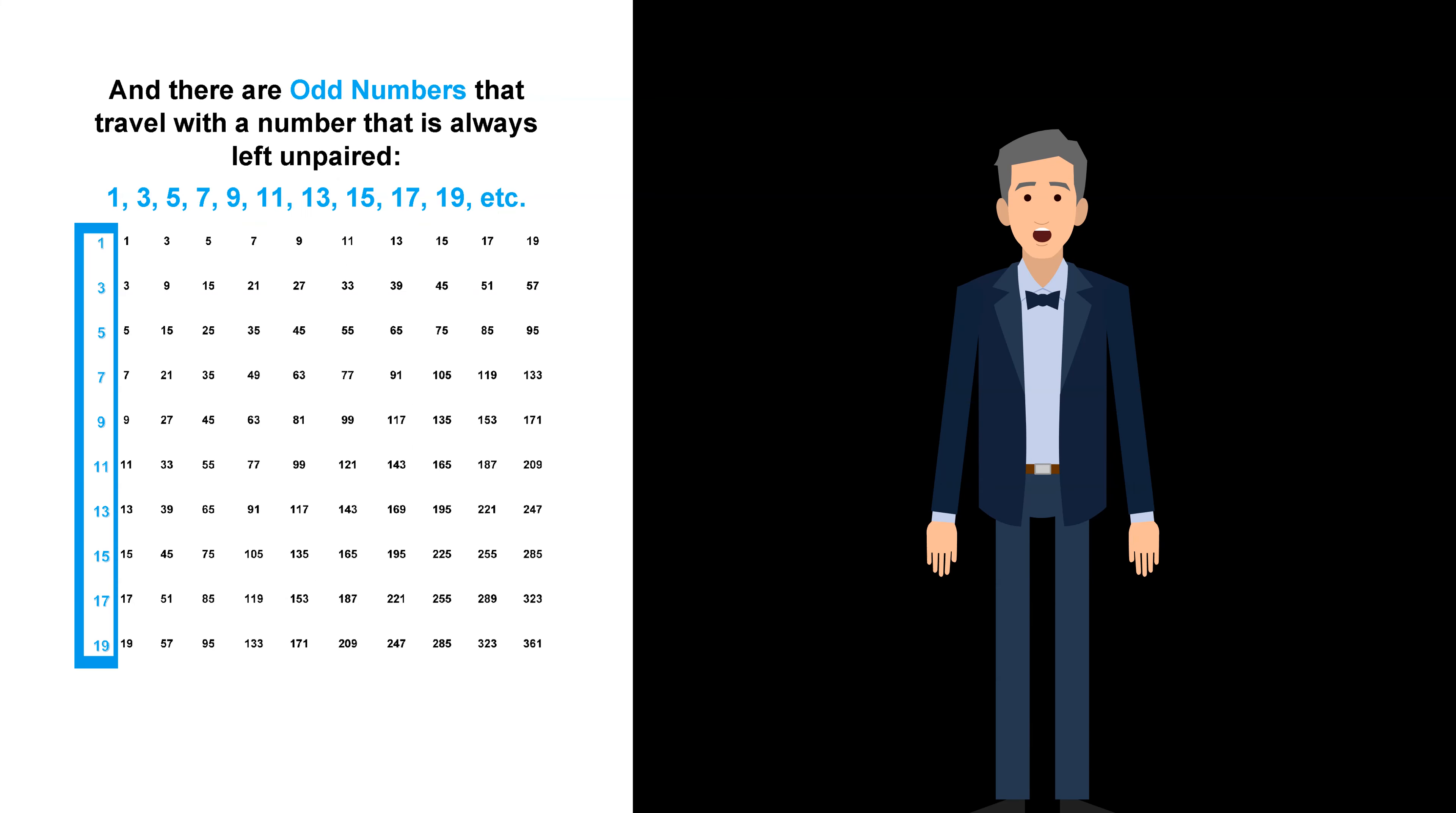And there are odd numbers that travel with a number that is always left unpaired: 1, 3, 5, 7, 9, 11, 13, 15, 17, 19, and so on.